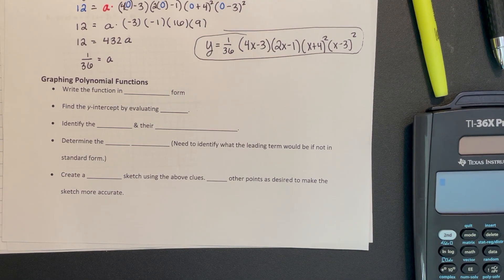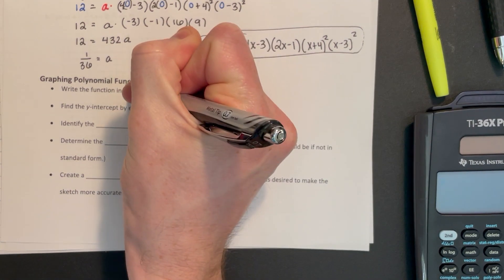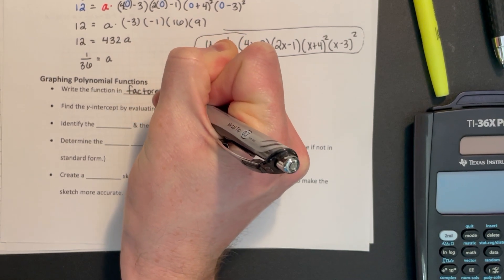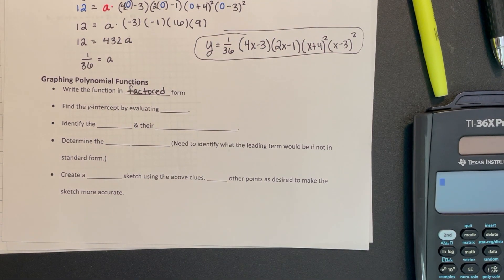Now that we've talked about all these key features, we want to finally put this all together and graph polynomial functions. A way to help make nice graphs of polynomials is to look at the factored form of that polynomial. A lot of times we may get it in standard form and we have to do the factoring, but we're going to start out with it already in factored form.